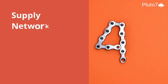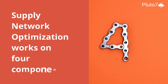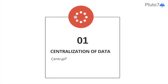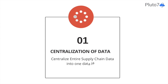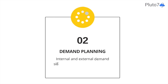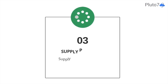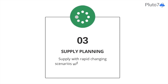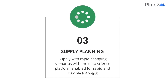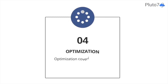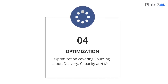Let us talk about how it works. Supply network optimization works on four key components: centralization of data — centralize your entire supply chain data into one data lake; demand planning — internal and external demand signals to centralize and connect the demand data and processes together; supply planning — supply in rapid changing scenarios with a data science platform enabled for rapid and flexible planning; and optimization, covering sourcing, labor, delivery, capacity, and other constraints.